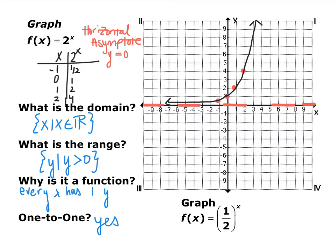It's a function because every x only has one y. 2 squared will always be 4. You can't plug in 2 and get a different number. And it is in fact 1 to 1. There's no repeated y coordinates. So if it is 1 to 1, what does that mean about its inverse? That's something to think about.